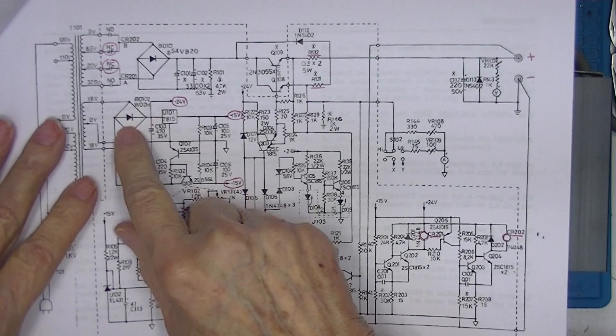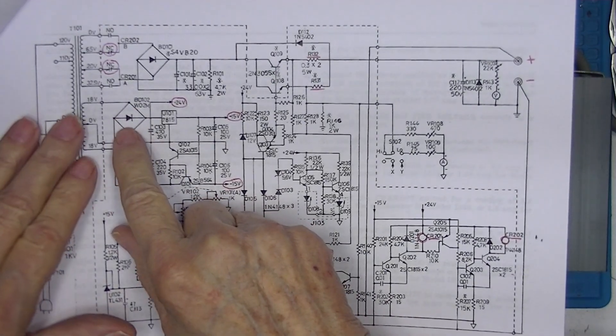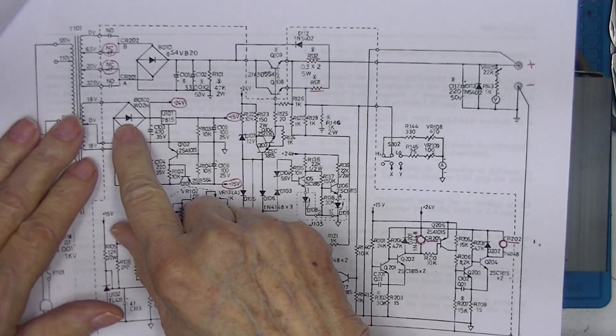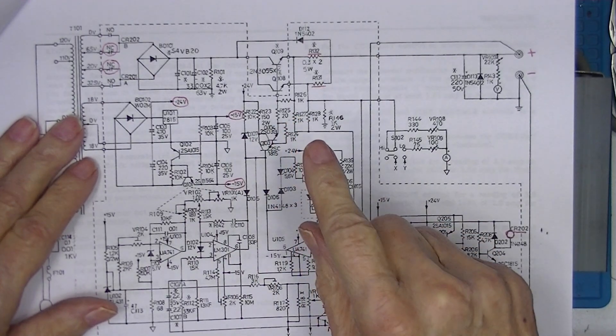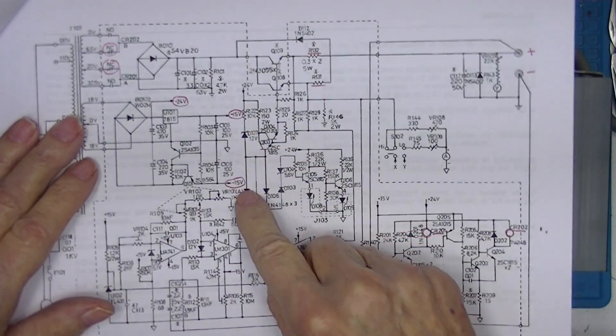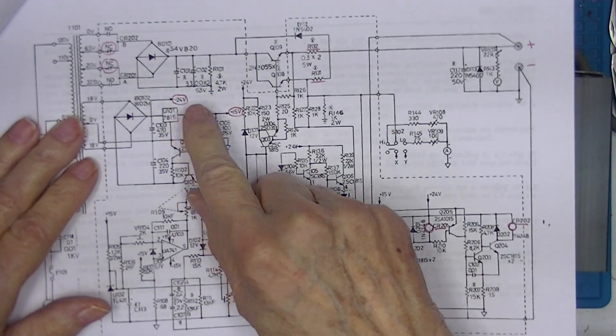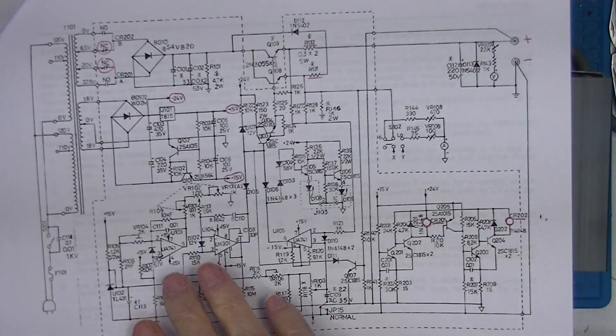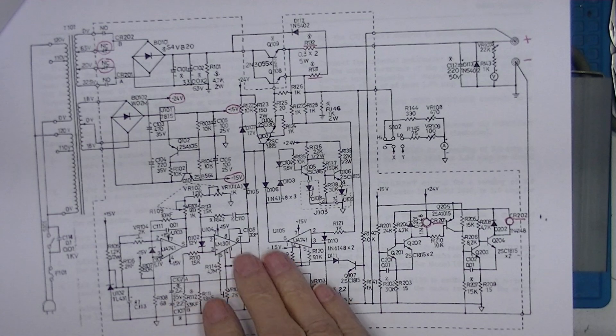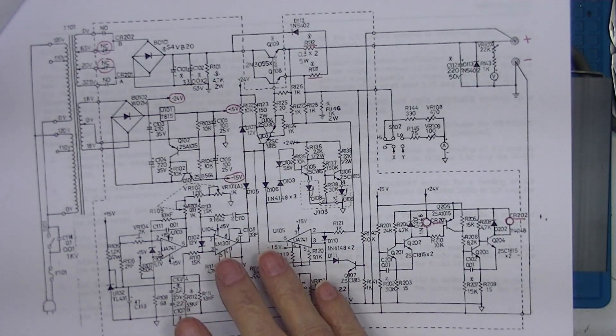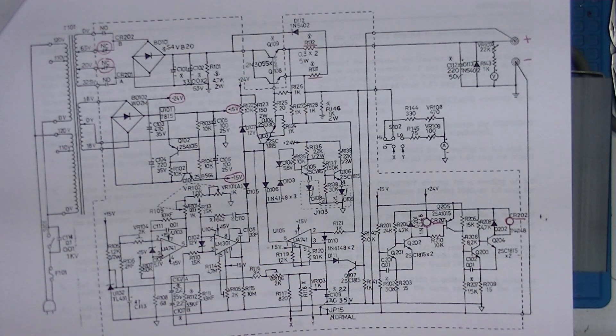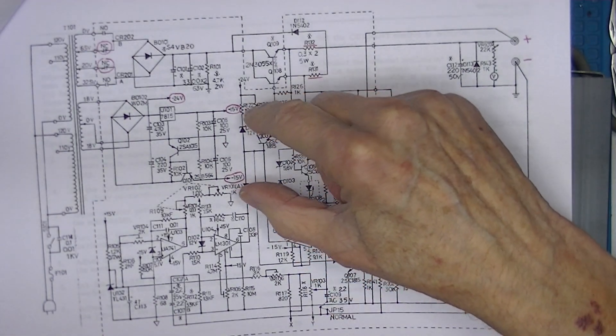This is a bridge rectifier - that's the way they're identified years ago - and it provides a plus and minus 15 and a plus 24. The integrated circuits used to set voltage and current can actually be run off a plus and minus power supply.